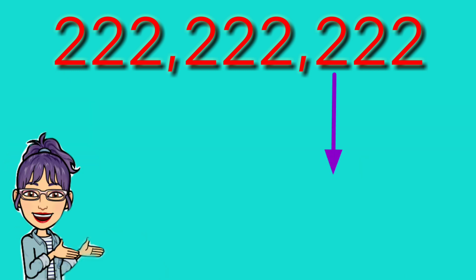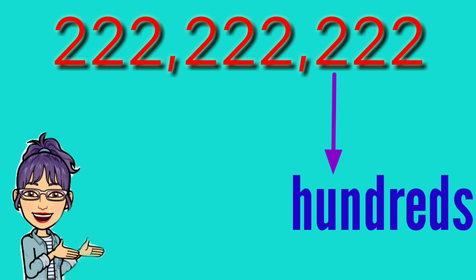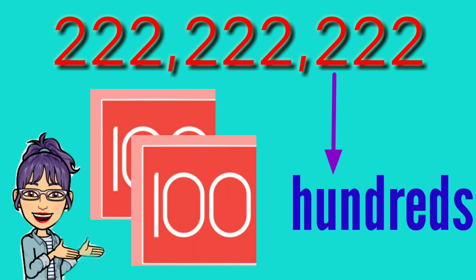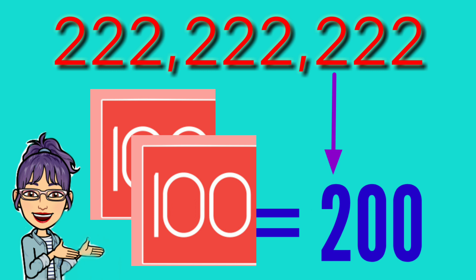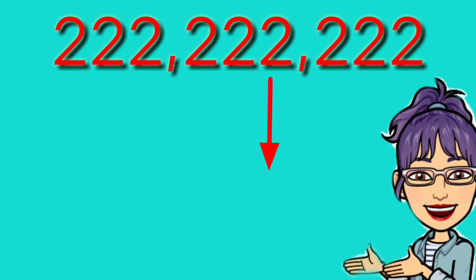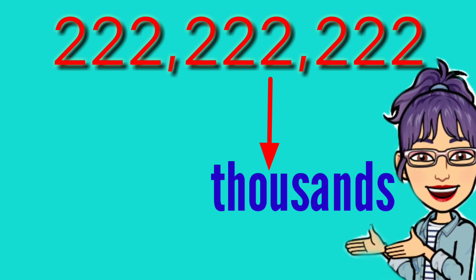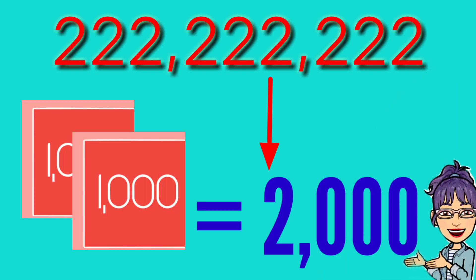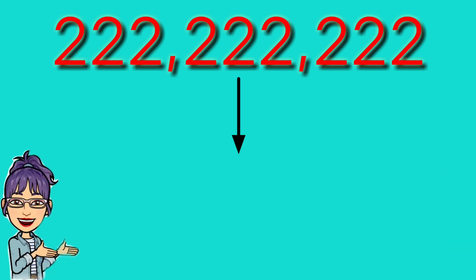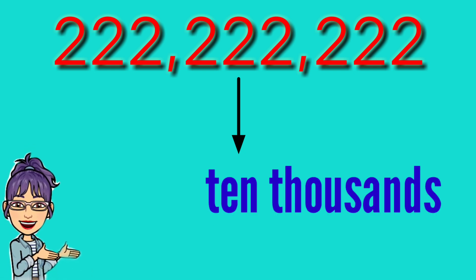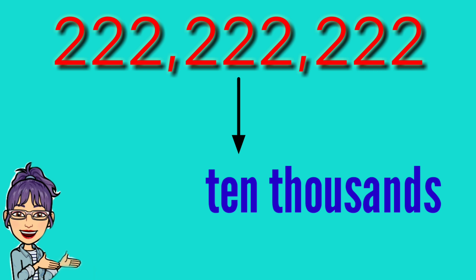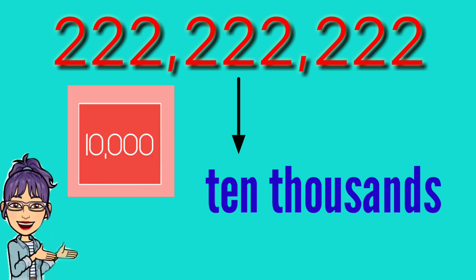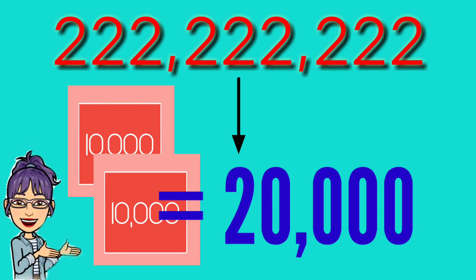The third digit from the right is 2 in the hundreds place. Two groups of 100: 100 plus 100 equals 200. Next, the 2 in the thousands place: 1,000 plus 1,000 equals 2,000. Then the fifth 2 from the right is in the ten thousands place: two groups of 10,000, so 10,000 plus 10,000 equals 20,000.